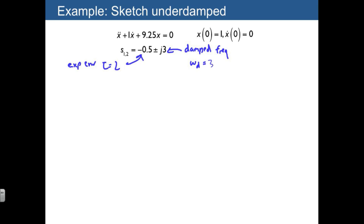Of 3. And if you're interested in the period, that's going to be 2 pi over omega d. Pi is about 3, so we can say that this is roughly going to be equal to 2.